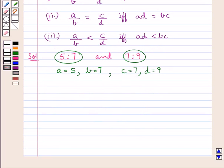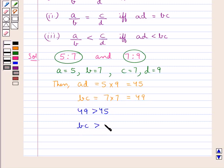Let us now find out AD and BC. AD would be equal to 5 multiplied by 9, that is 45, and BC would be equal to 7 multiplied by 7, which is 49. Clearly 49 is greater than 45, that is BC is greater than AD, or we can say that AD is less than BC.